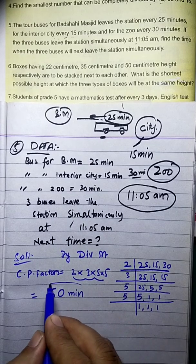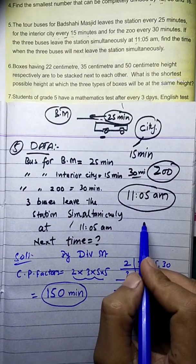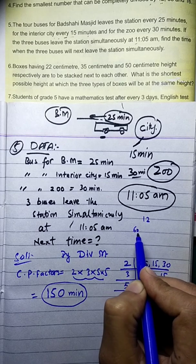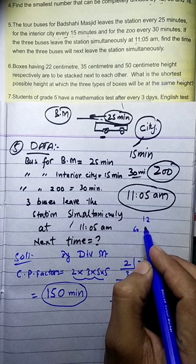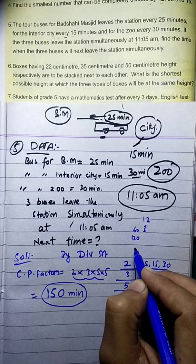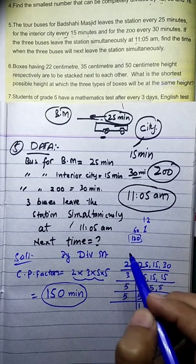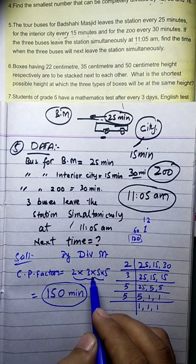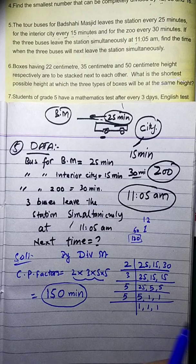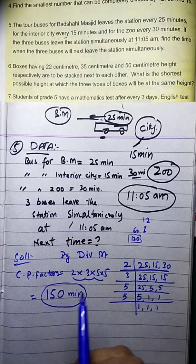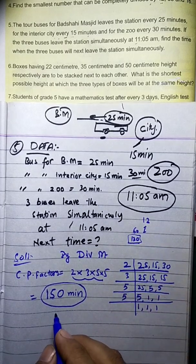The LCM is 150 minutes. So 150 minutes after 11 AM. Now, 150 minutes equals 2 hours and 30 minutes. So 11 AM plus 2 hours 30 minutes gives us 1:30 PM. Let me recalculate: 2×3×5×5 = 150, which is 2 hours and 30 minutes after 11 AM.